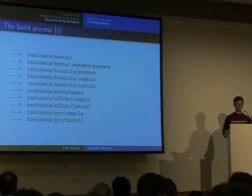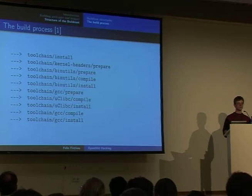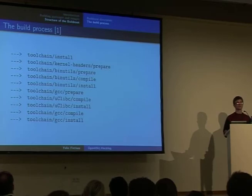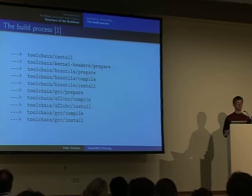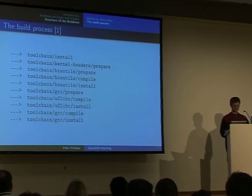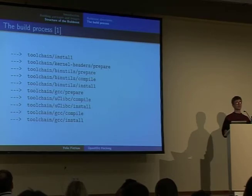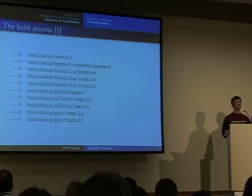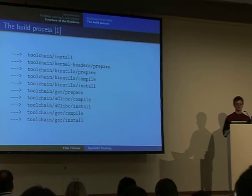The next step is to prepare, compile, and install the binutils. By convention, the prepare target unpacks the source directory, then applies all patches and makes sure that make knows about the status of the package. The compile target builds all the binaries and also builds the packages if they are present — which they're obviously not in the toolchain. Additionally, if you want to install development files into the staging directory, this is also done in the compile step.